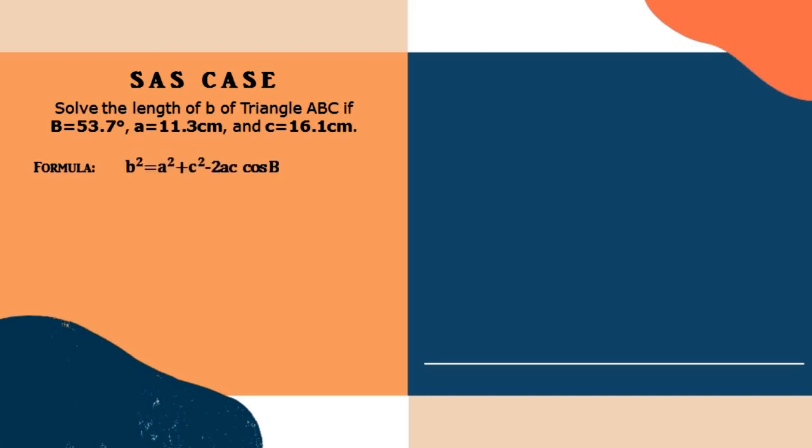Our first example is an SAS case. Solve the length of b of triangle ABC if B is equal to 53.7 degrees, a is equal to 11.3 centimeters, and c is equal to 16.1 centimeters. The formula that we are going to use is b squared is equal to a squared plus c squared minus 2ac cosine B.